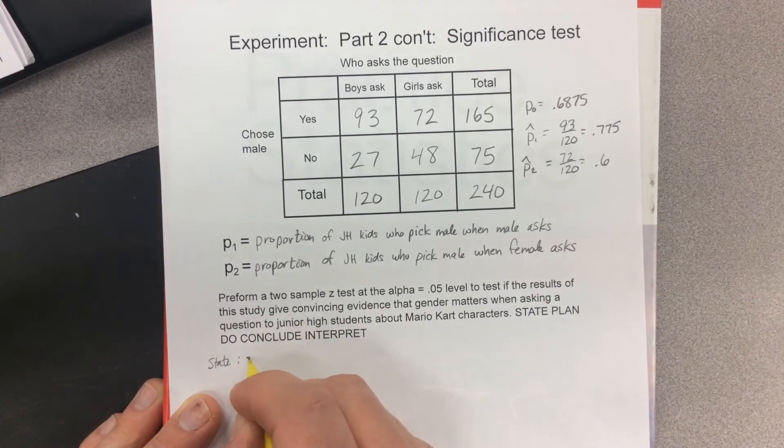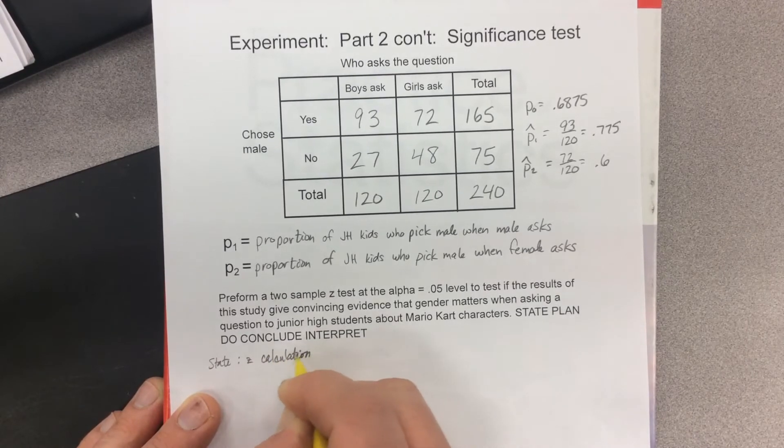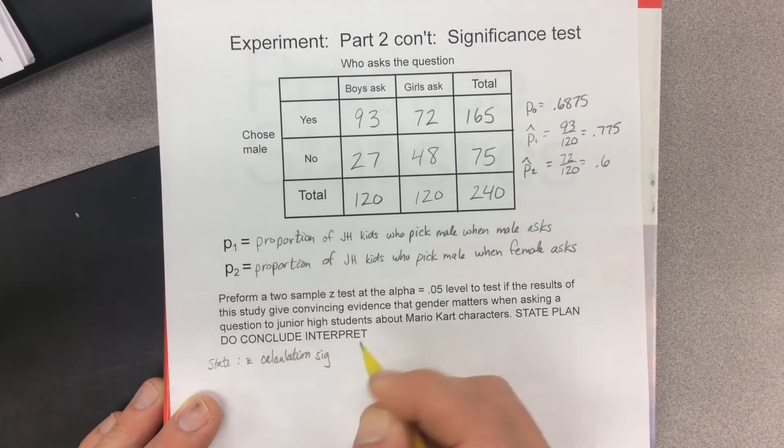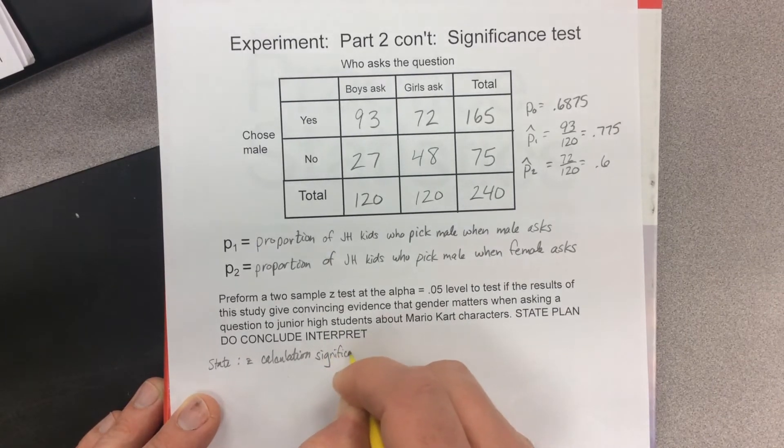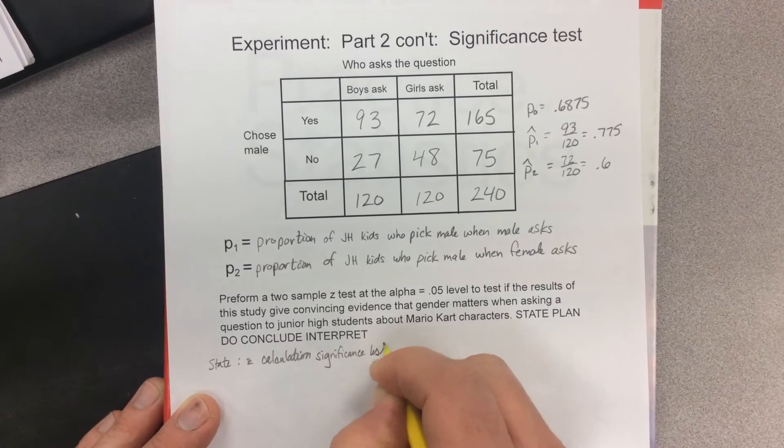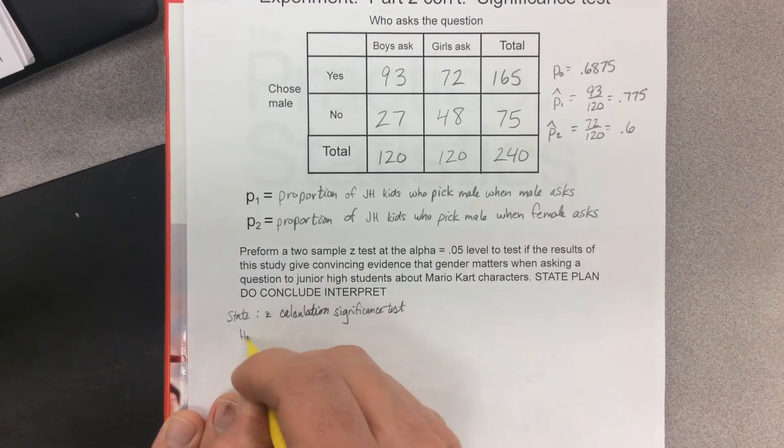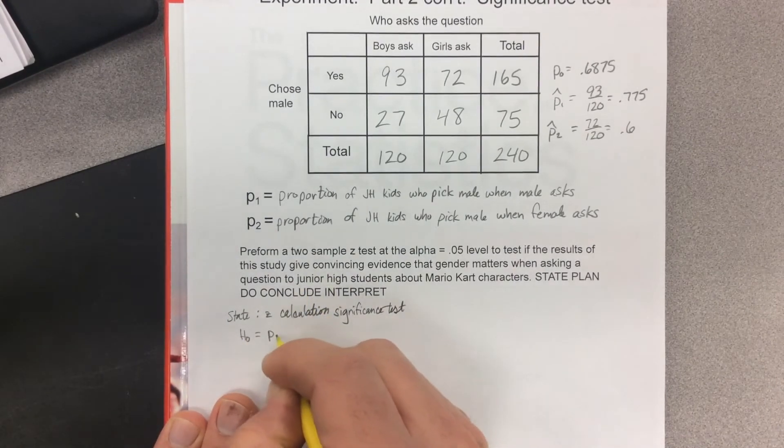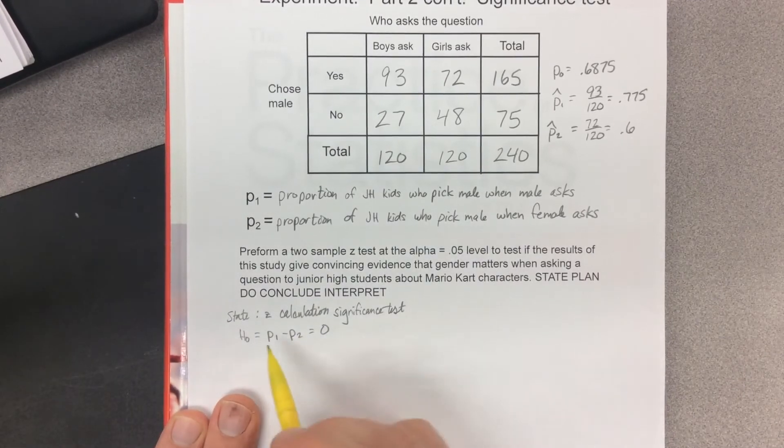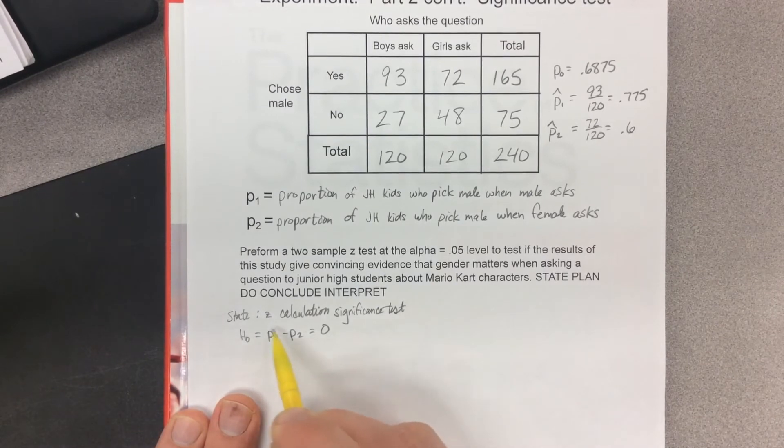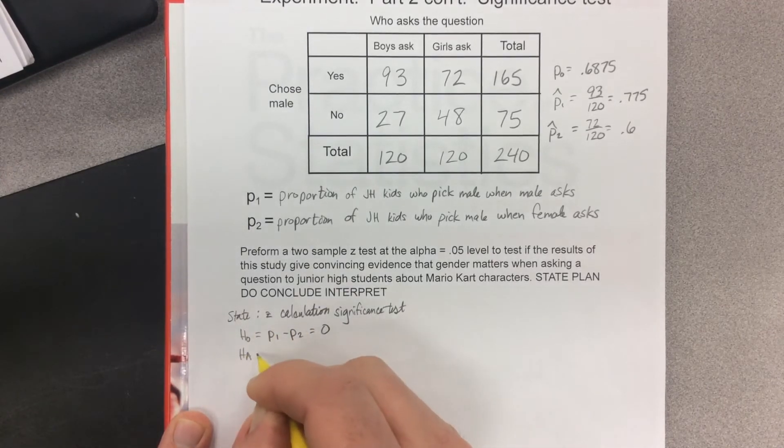This is going to be a Z-calculation significance test. We have a null hypothesis, H of 0. Our null hypothesis is that there is no difference in the true proportion. So there is no difference in proportion, these two numbers would be the same, so we would get zero if we subtracted them.